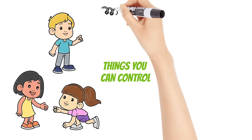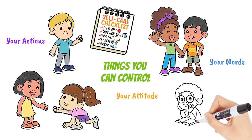Some examples of things you can control might include how you treat others, how much you take care of yourself, your actions, your attitude, your words, the friends you choose to have, or how hard you work.